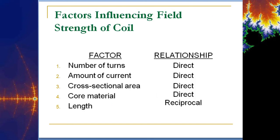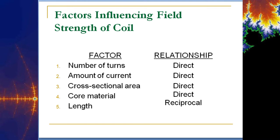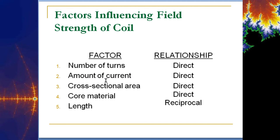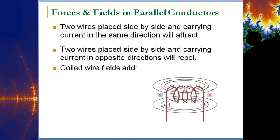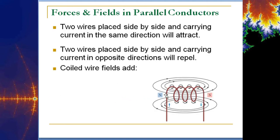Here are the factors that influence how strong the magnetic field is: the number of turns (more turns means a stronger field), the amount of current (a direct relationship), the cross-sectional area of the wire, the core material (iron facilitates magnetic flow easier than air), and the length — which is reciprocal. Four coils over half a meter produce a stronger magnetic field than those same four coils spread over a meter.